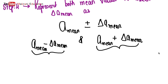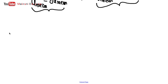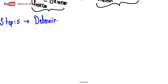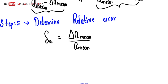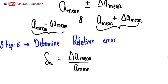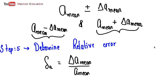Step 5 is to determine relative error. The formula for relative error, delta_A, is: delta_A equals delta_A_mean over A_mean. It is simply the ratio of your absolute error to your mean value.